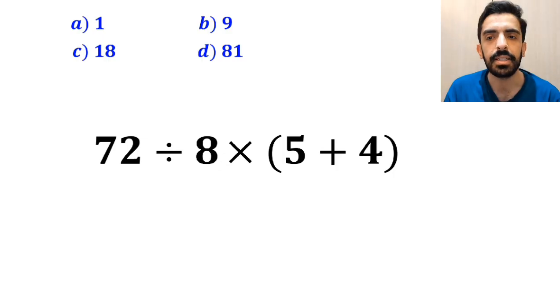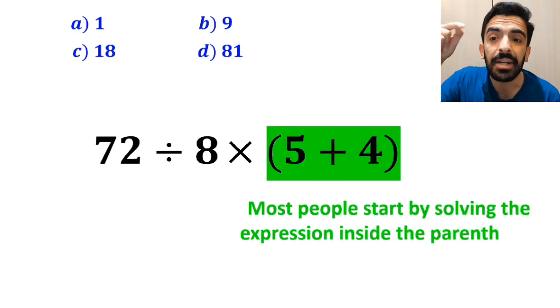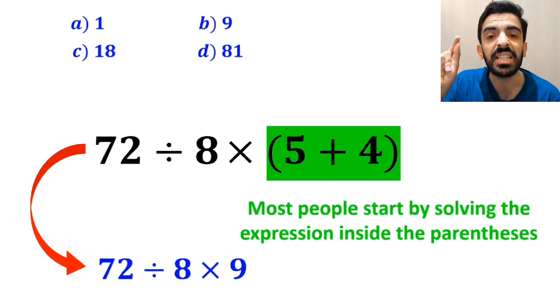Let's take a closer look and solve it together. In the first step, most people start by solving the expression inside the parenthesis and replace it with 72 divided by 8 then times 9.